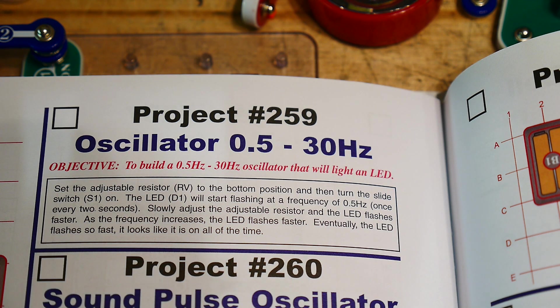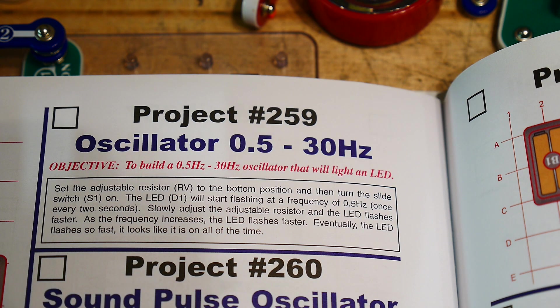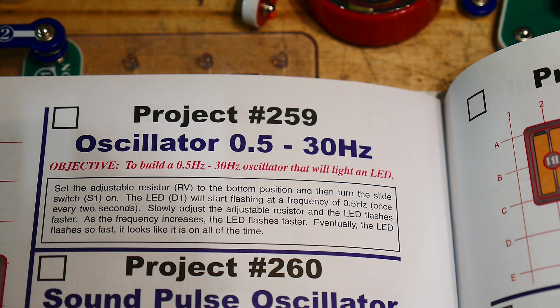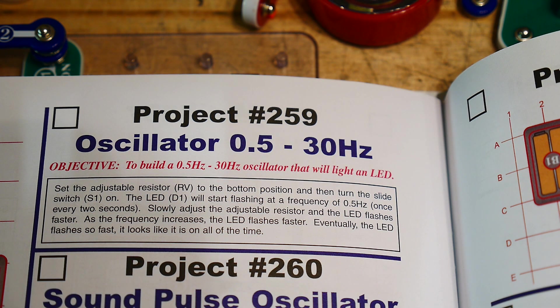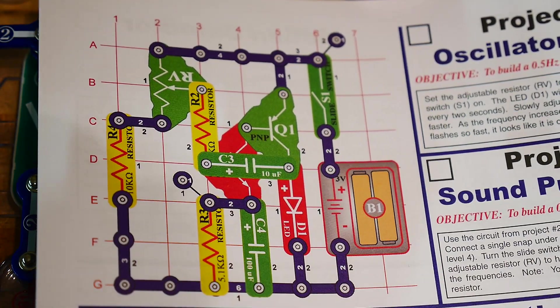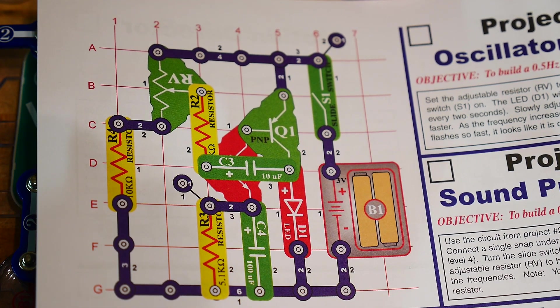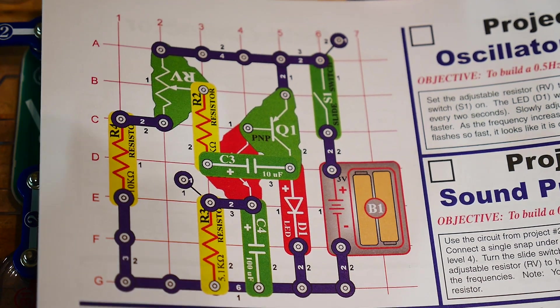Alright, so I skipped ahead in the book to project 259, an oscillator. The reason I like it is it actually uses a real circuit with transistors and capacitors and things like that. This is how you're supposed to hook it up, which is difficult to figure out.